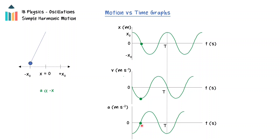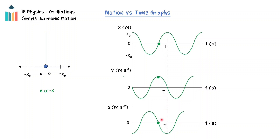As the pendulum continues to oscillate through to the maximum displacement to complete half a period, the displacement will move to a maximum in the negative direction. The velocity will again be zero meters per second, and the acceleration will be a maximum in the positive direction. As the pendulum returns to the equilibrium position, the displacement will return to zero meters, the velocity will be a maximum, and the horizontal acceleration will be zero meters per second squared.